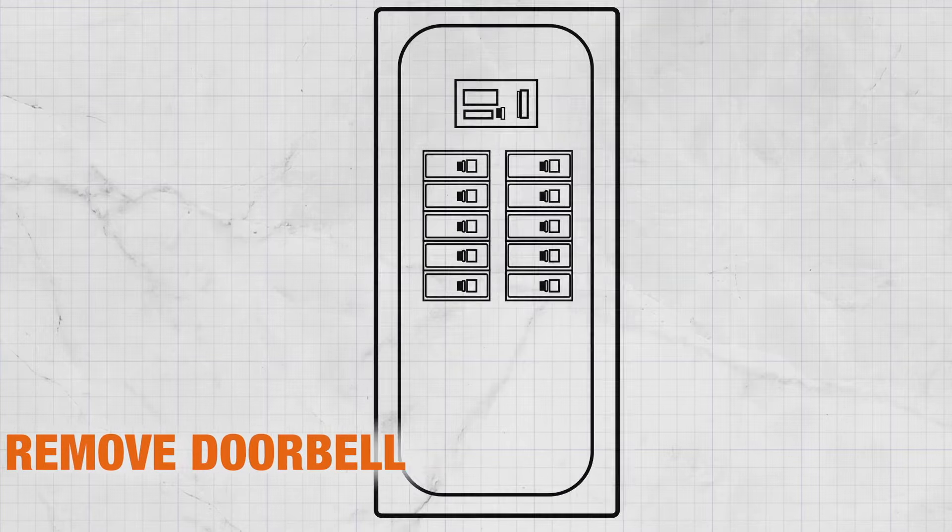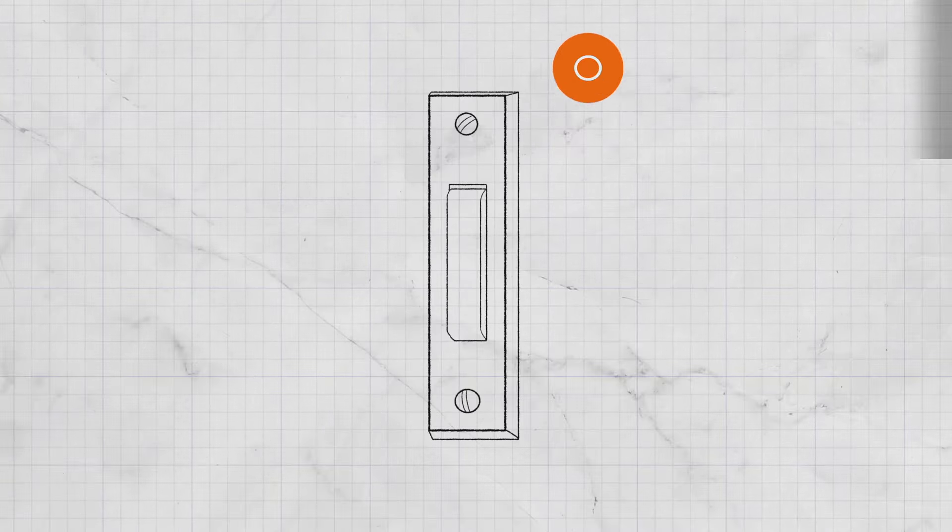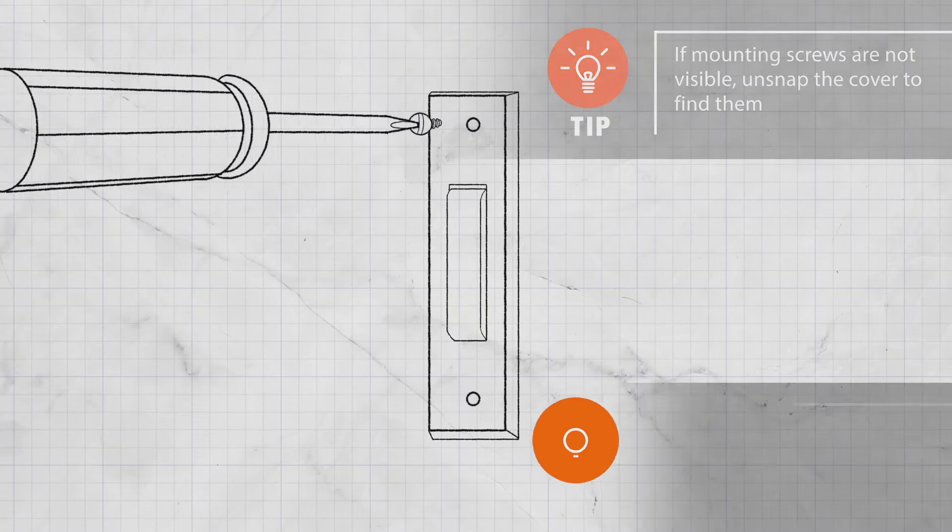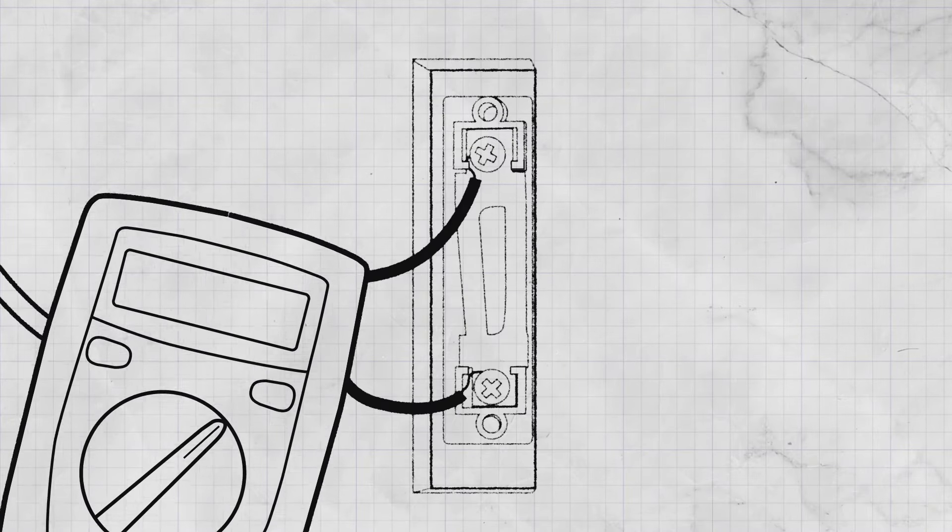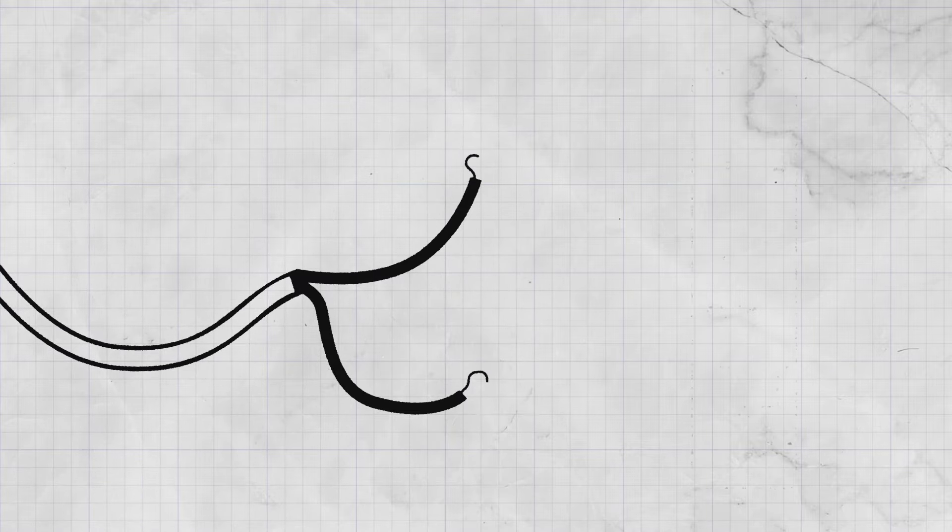To remove a wired doorbell, first turn off the power at your home's circuit breaker. Use a screwdriver to remove the mounting screws that secure the doorbell cover. Carefully pull the button housing away from the wall. Use a voltage tester to test the wires to ensure the power is off and disconnect the wires from the button.